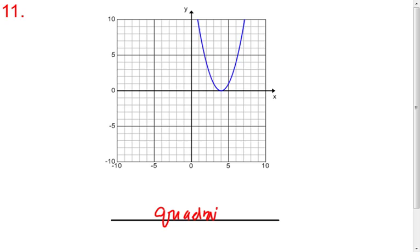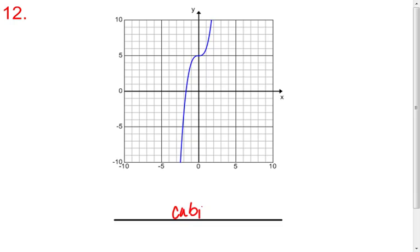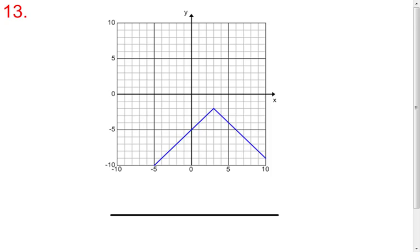Number 11 is quadratic. 12 is cubic. Not a real strong lightning bolt shape, but it is. It only does cross the axis in one spot, so that means of the three roots, one is real and two are imaginary.